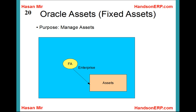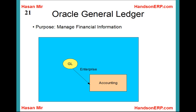Oracle Assets, or Fixed Assets, is the module of Oracle Financials that lets you manage your assets. It helps you answer questions like which asset is located at what location, which employee is using that asset, and what has been the depreciation expense of the asset. Depreciation is an expense that each asset incurs over time. Finally, the General Ledger module helps you manage your accounting, which is a quantitative measurement of business events. Everything at the end of the day gets translated into debits, credits, and GL accounts, and together these help you make business decisions and assess the health of the company.